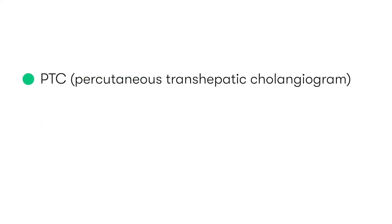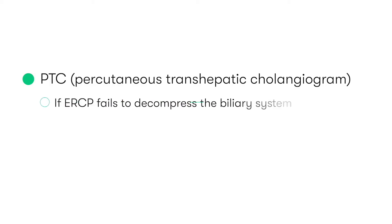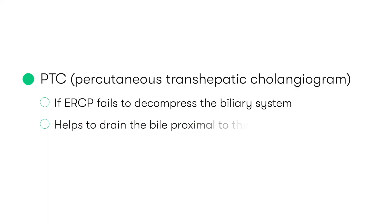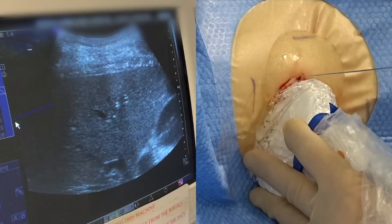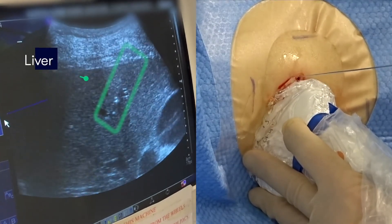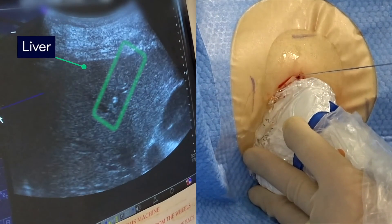Alternatively, if the ERCP-introduced stent fails to decompress the biliary system, these patients can undergo a percutaneous transhepatic cholangiogram, or PTC. This aids in the drainage of the infected bile that's proximal to the blockage. PTC involves inserting a drain through the abdominal wall and via the liver into the bile duct, all under radiological guidance and with the use of a guide wire.